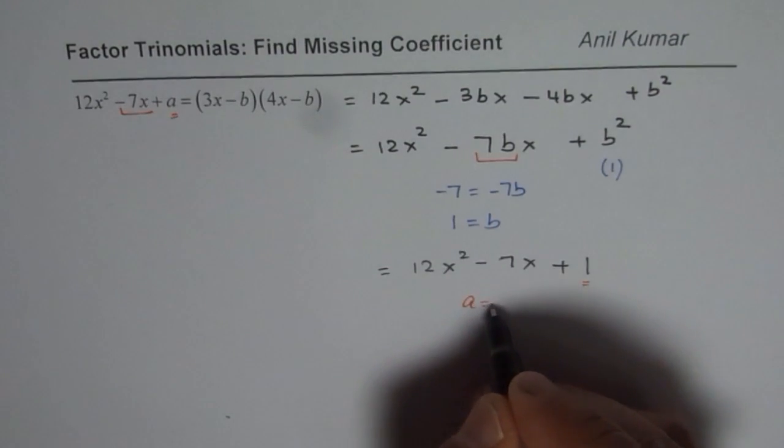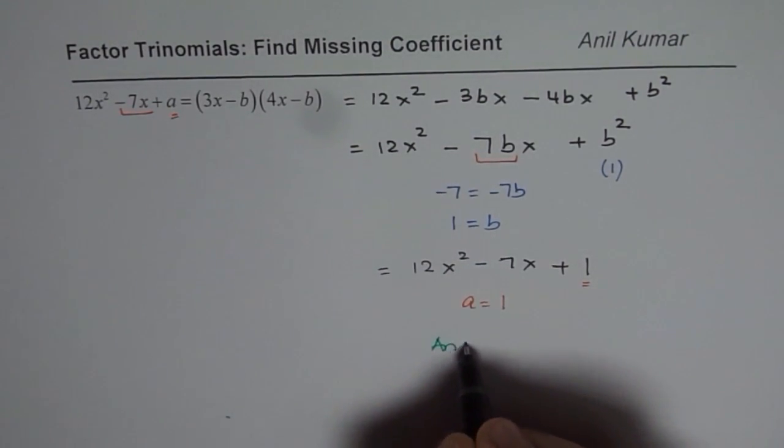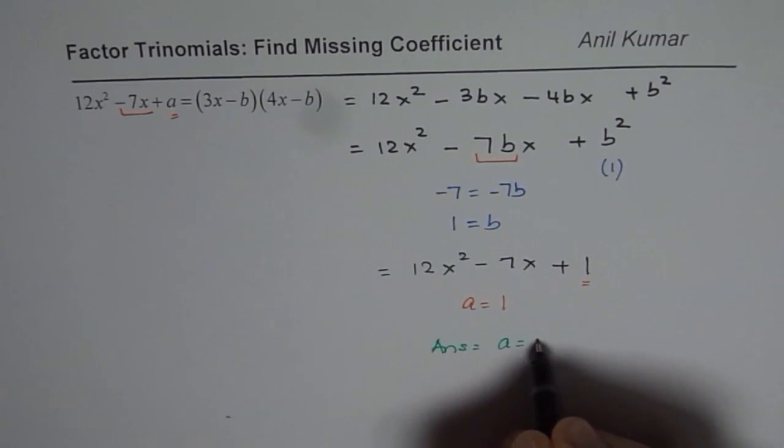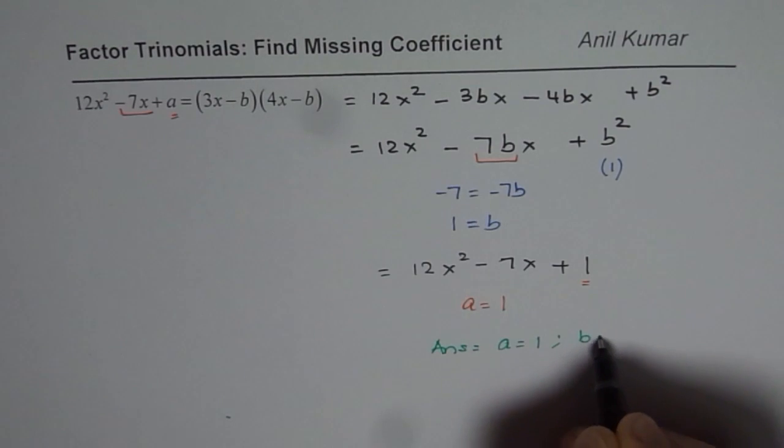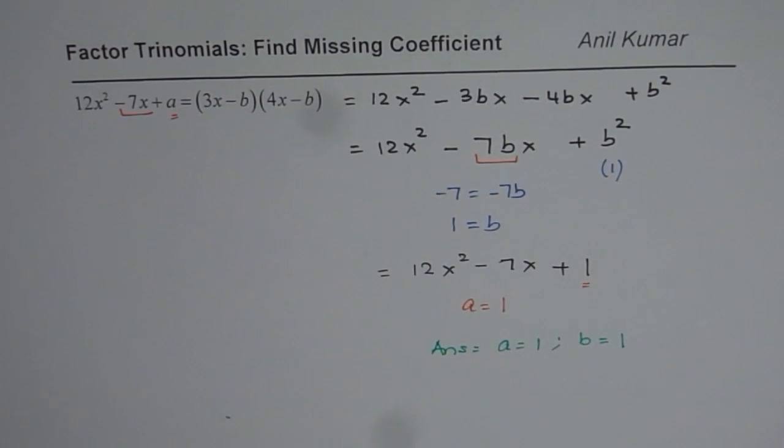So you get a as 1. And therefore, your answer is a equals to 1 and b equals to also 1, right? So that becomes your answer. So that is how you can actually expand and easily find the answer. The other way is, you know your techniques.